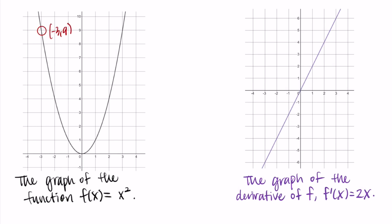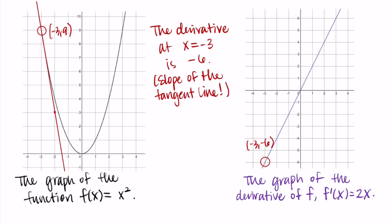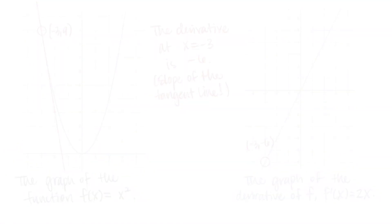Let's look at a specific point on the graph of f: the point (−3, 9). At this point f is decreasing, so this should correspond with a negative output value on the graph of f'. And it does — on the graph of the derivative, the point is (−3, −6). This means the derivative at x = −3 is −6, or the slope of the tangent line at x = −3 on the original function is −6. We can draw that tangent line and check: we go down 6, right 1, so the slope is −6. It checks out.